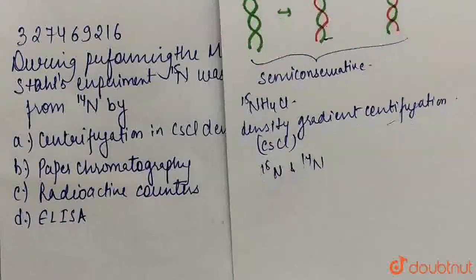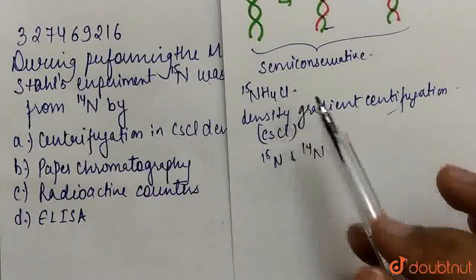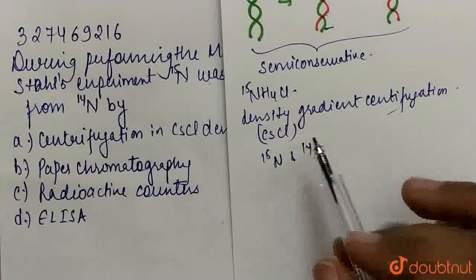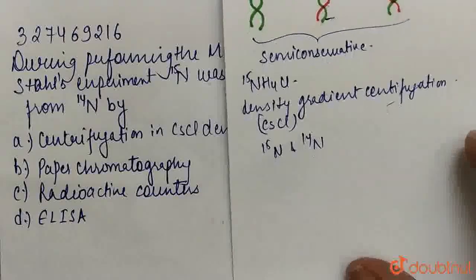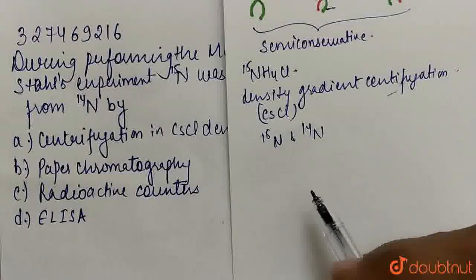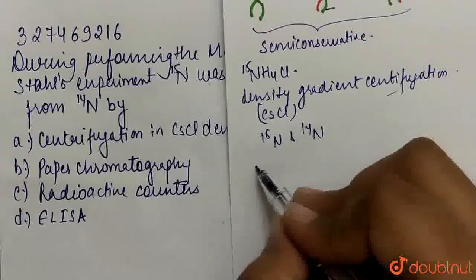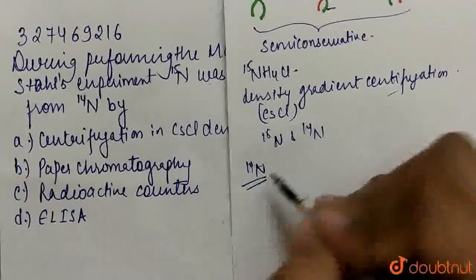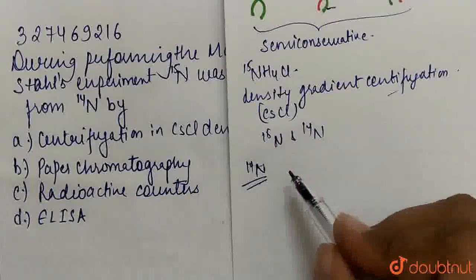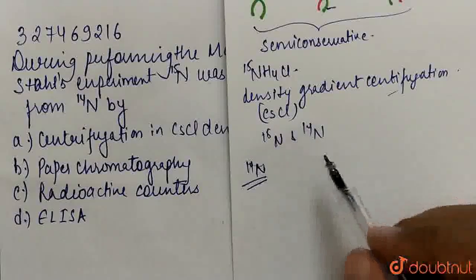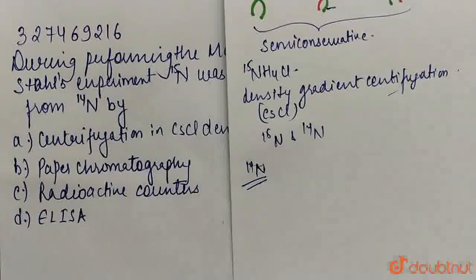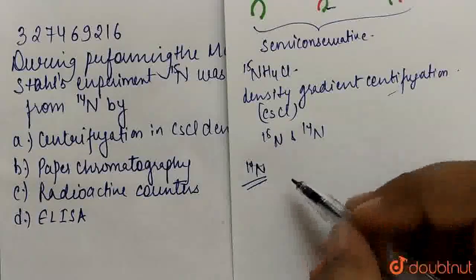We use cesium chloride as a density gradient because N15 is not a radioactive isotope, it is heavy nitrogen. So N15 and N14 density is different, so we can separate it using density gradient centrifugation. So what happened was that they grew in N15, then they transferred these cells into normal medium with N14, that is light nitrogen.